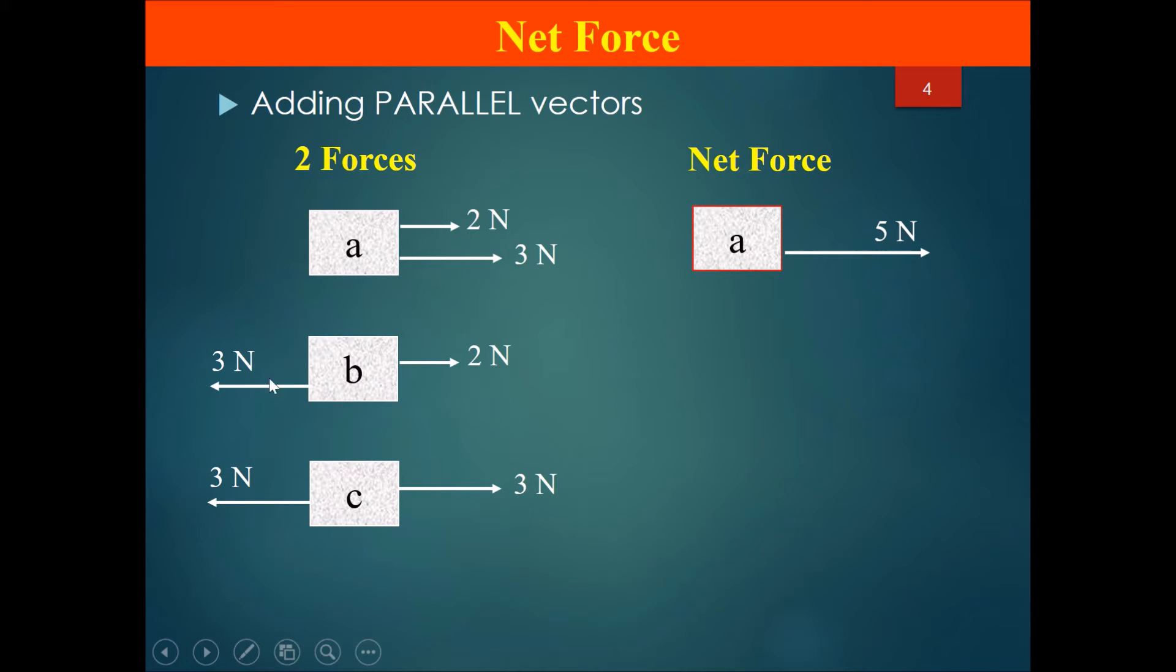In the next scenario, the three newtons is pulling on B towards the left, while two newtons is pulling on B towards the right. These two are in opposite directions. So what should we do about this? What is the final net force? Well, if you said one newton, you are right. That's great.